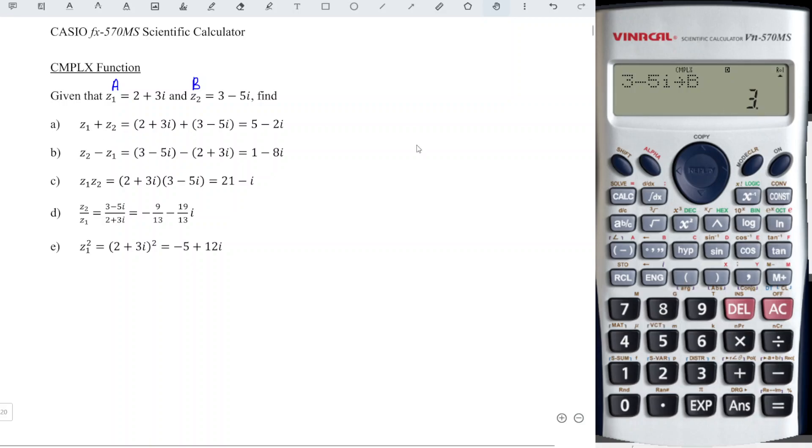So we have alphabetical operations, alphabet a plus alphabet b, z1 + z2. So we have 5. This is the real part and we shift press equals to get the imaginary part. Next, z2 - z1.